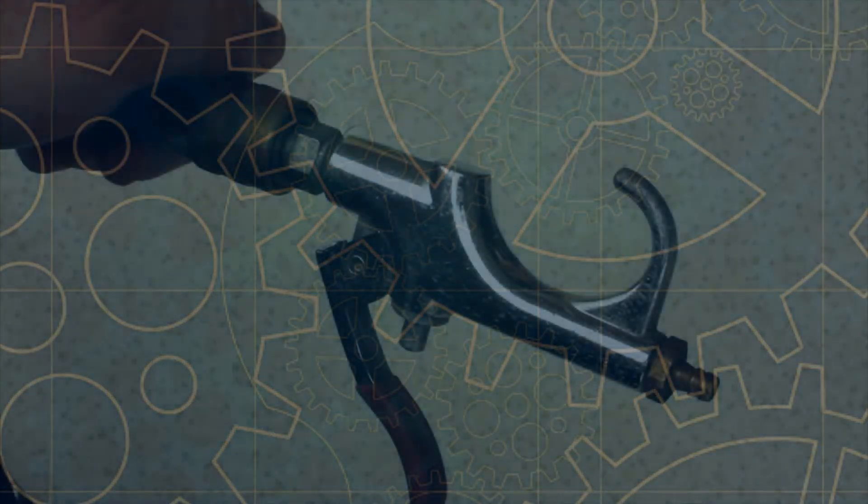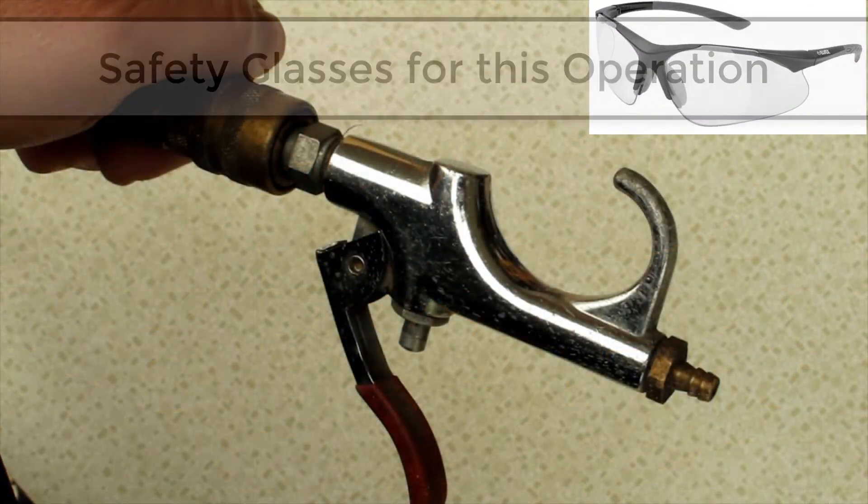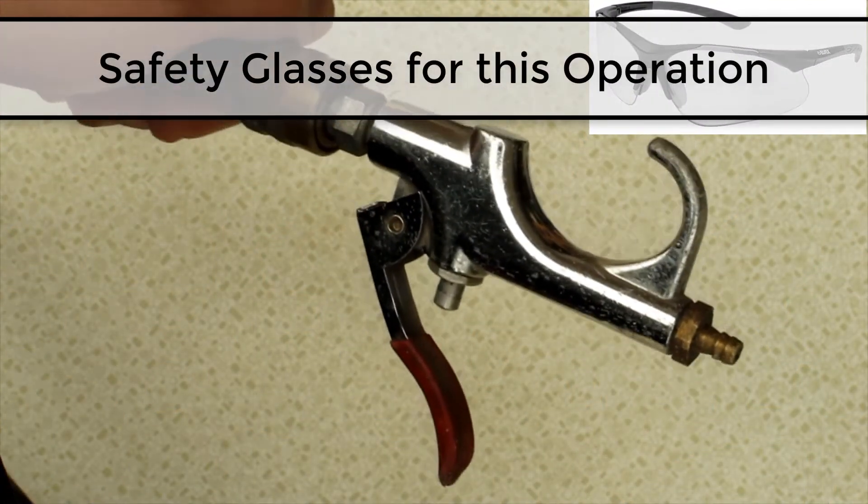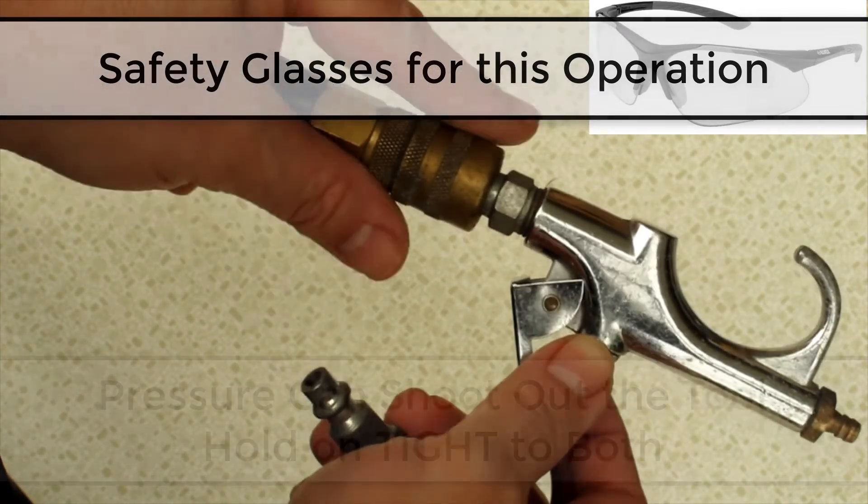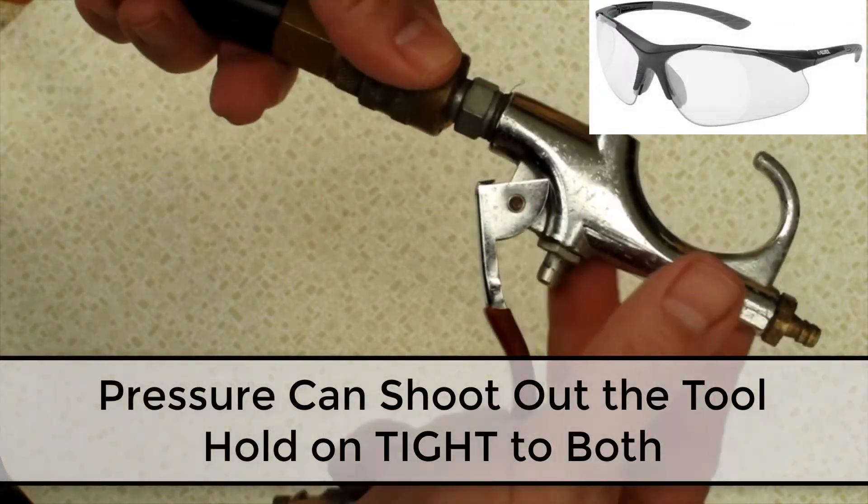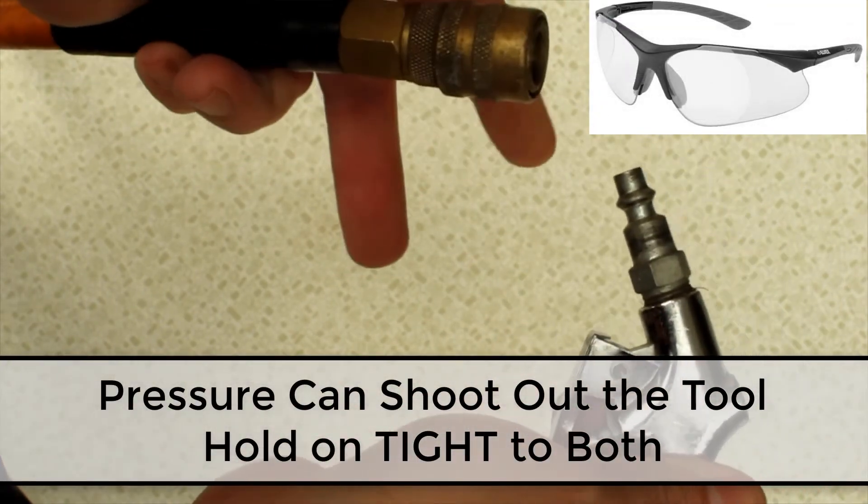Okay, now that our compressor is charged up, let's go ahead and put the right tool on the end of our hose. I want to get rid of the air gun and put on my tire pump inflator. So I'm going to grab onto the collar of the quick disconnect, hold tightly onto my tool, and pull the quick disconnect backwards.